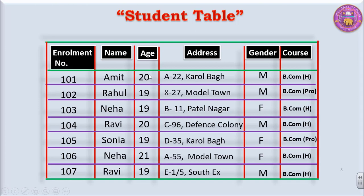The age 19 or 20 appears a number of times. Similarly, the address of two students can be the same — they may be sharing the same PG accommodation. In the column gender, we find duplication. In the column course, values like B.Com Honours or B.Com program appear a number of times. But there is one particular field in which there is no duplication, no repetition, and this field contains unique values — in every row you will find a different number.